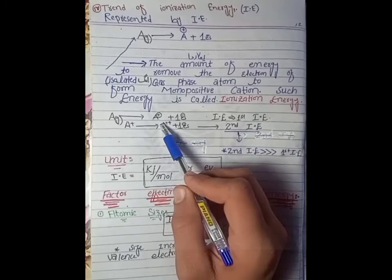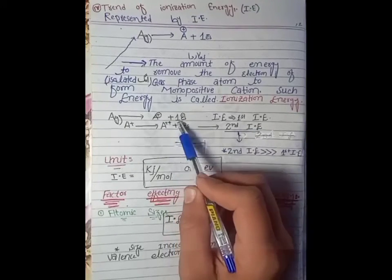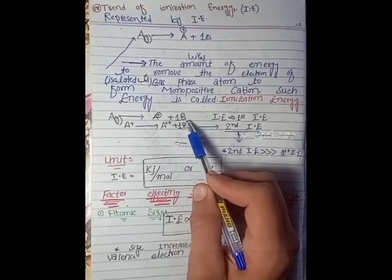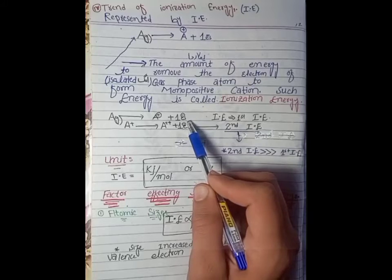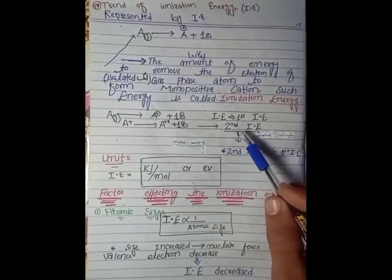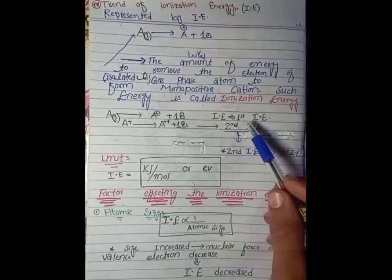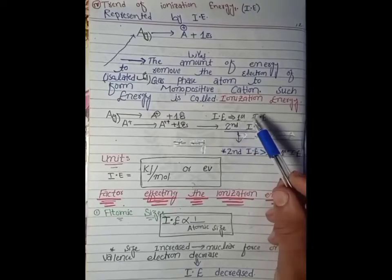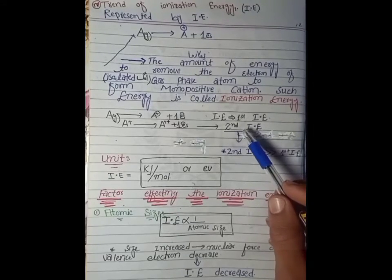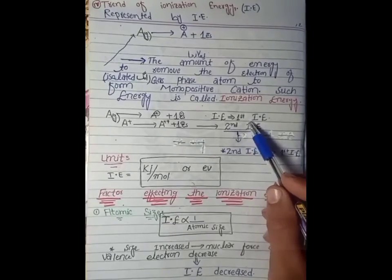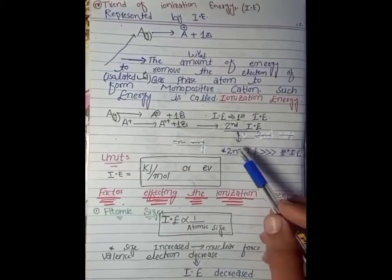The energy required for the first electron ejection is called the first ionization energy.